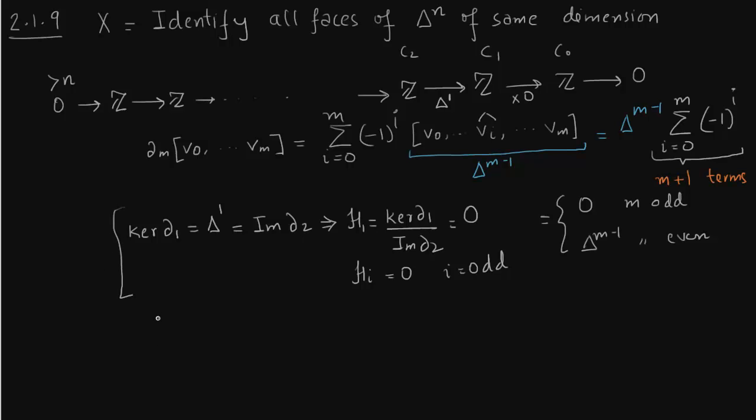What about i which are even? Now you see kernel of delta 2 is zero. So what is H2? H is kernel of delta 2 over image of delta 3. Well denominator does not matter here because the numerator is zero. So this will be true for all H_i which is even. Now only case non-zero remaining is H0, because obviously for higher dimension it is zero because there are no cells there.